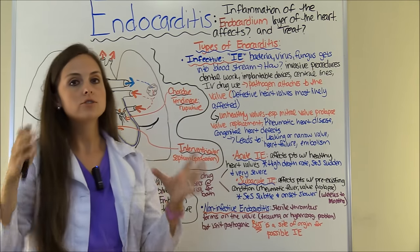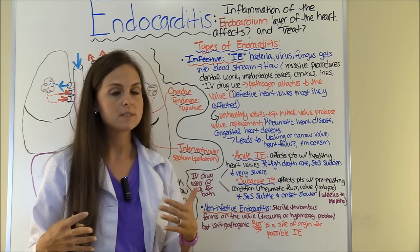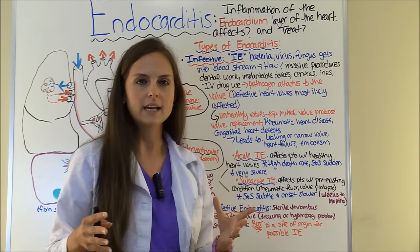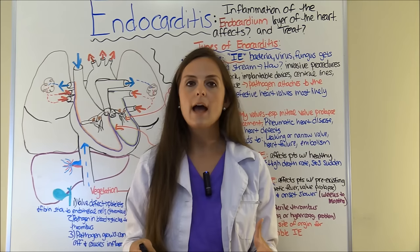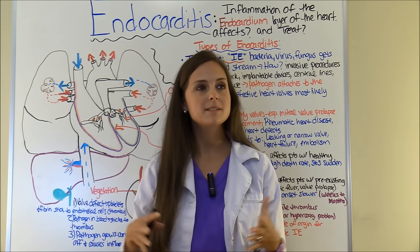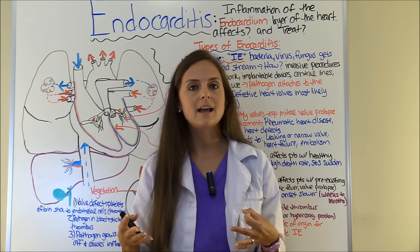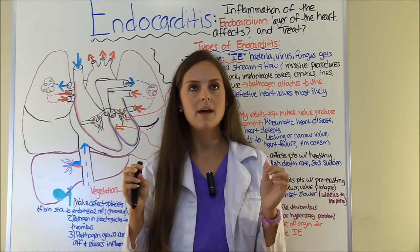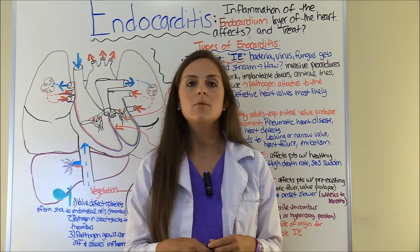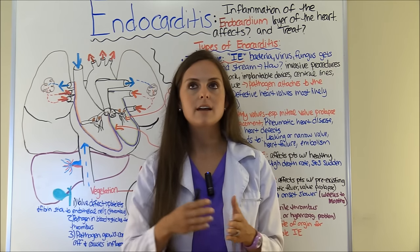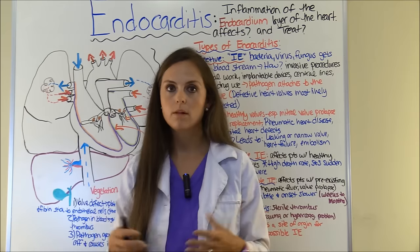How is it treated? If you get infective endocarditis, it is typically treated with antibiotics. However, it's tricky because your heart valves do not have a blood supply going to them. So if you get some type of pathogen on that valve, your body won't recognize it and send white blood cells there. And whenever the patient takes antibiotics, they have to take them for a long period of time because it's hard to reach the valve with no blood supply.